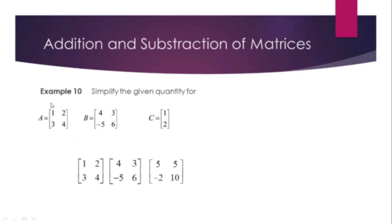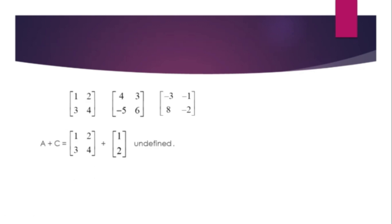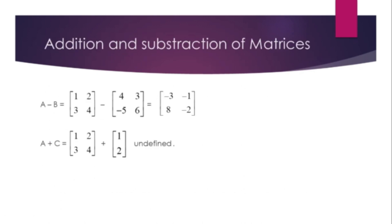Example 10: Simplify the given quantities for matrices A, B, C. Find A+B, A−B, and A+C. A plus B gives [5, 5, -2, 10]. A minus B gives [-3, -1, 8, -2].